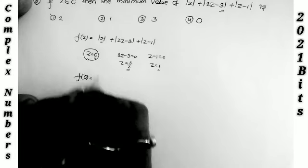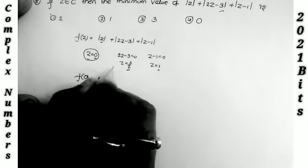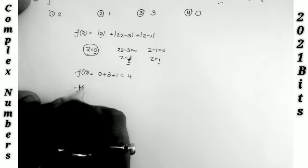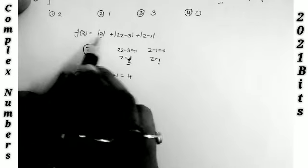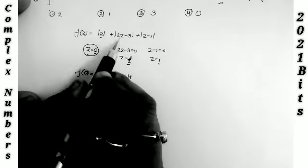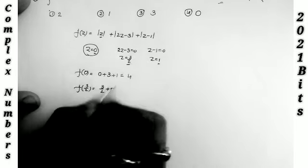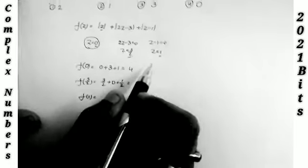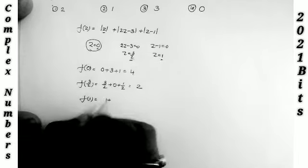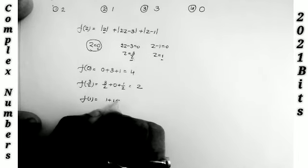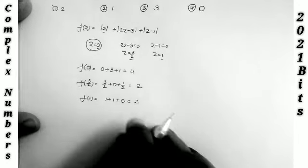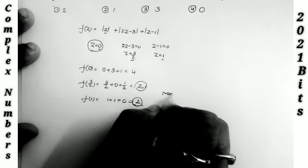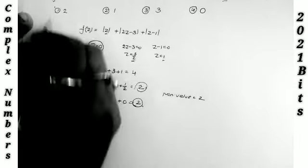Computing f(0) = 0 + |−3| + |−1| = 3 + 1 = 4. Computing f(3/2) = 3/2 + 0 + |3/2−1| = 3/2 + 1/2 = 2. Computing f(1) = 1 + |2−3| + 0 = 1 + 1 = 2. The minimum of {4, 2, 2} is 2, so the minimum value is 2. That is the first option.